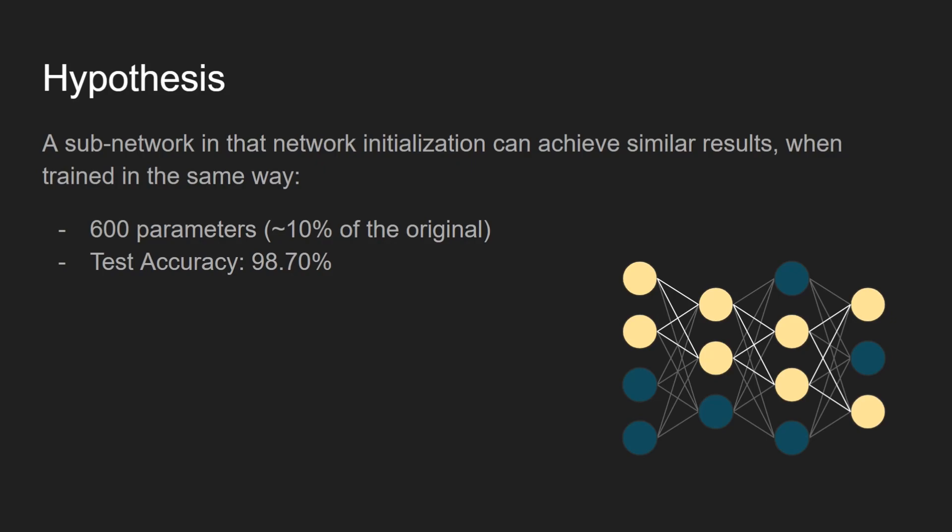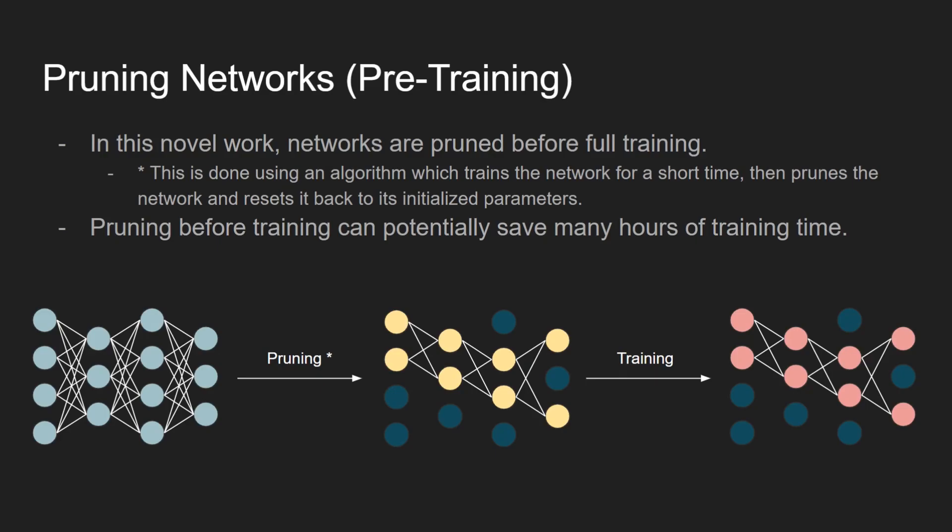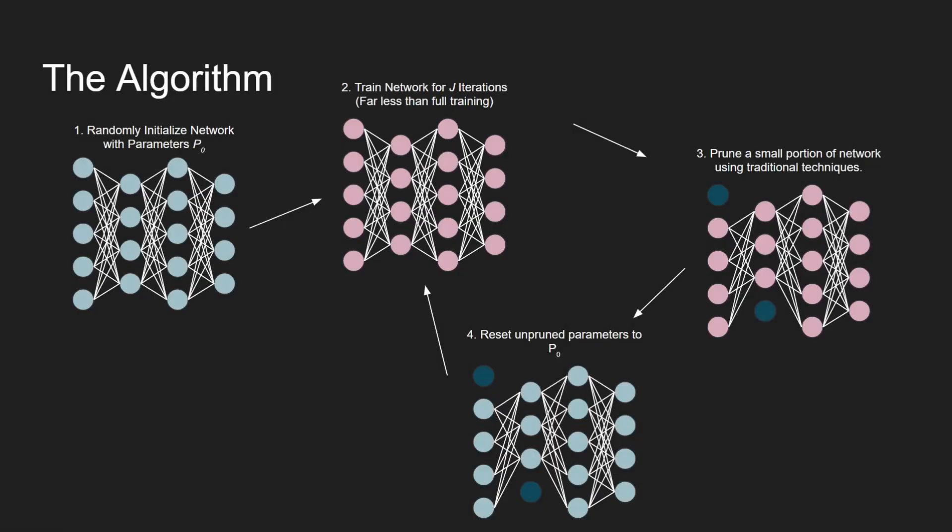If this hypothesis is correct, it could potentially save many hours of training time and increase the efficiency of the network. The hypothesis may also lead to the design of better networks as we learn more about what makes a winning ticket a winning ticket. The authors set out to prove that such subnetworks actually do, in fact, exist.